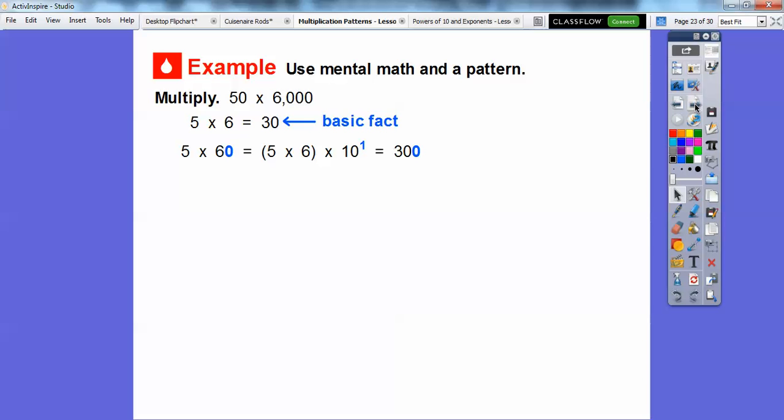So 5 times 60 is going to be the same as 5 times 6, and then times 10 to the first, because there's one 0 right there. So 5 times 6 is 30, and then add this 1 0. This 1 0 counts for that 1 right there, or it counts for this 1 0 right there. That's how I do it. So 5 times 600 is going to be 5 times 6 with these two 0s right here, so times 10 squared, or 10 times 10 is 100. So 30 and add two 0s. 30 with two 0s is 3,000.